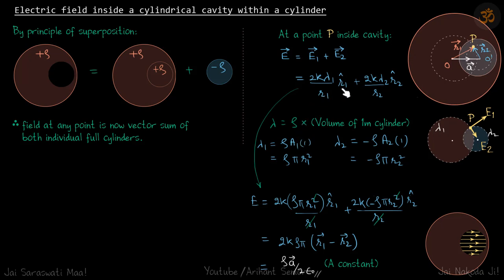Now we don't know the term lambda. So let's find lambda first. Lambda is rho times volume of 1 meter of cylinder. If you take one meter of the cylinder and you find the charge on it that is nothing but lambda because lambda is coulomb per meter. We take one meter of cylinder and find the charge on it and that should be lambda. For first cylinder it becomes rho into A1 into 1. Area times 1 is the volume, times rho is the charge.